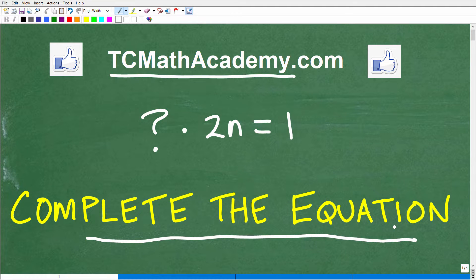So typically we are looking to solve an equation. In this problem, we are looking to complete this equation. So we have something, we don't know what this is, being multiplied by 2n. We just know that the product of this is equal to 1. So the question is, what is this? What is this equal to?